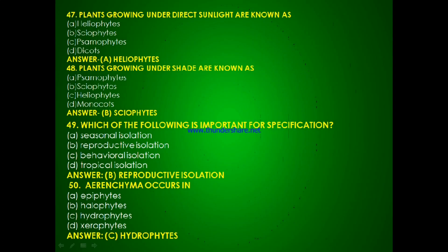Question 45: Plants growing under direct sunlight are known as — heliophytes, sciophytes, xerophytes or dicophytes? The answer is A, heliophytes. Question 46: Plants growing under shade are known as — xerophytes, sciophytes, heliophytes or monocytes? The answer is B, sciophytes.